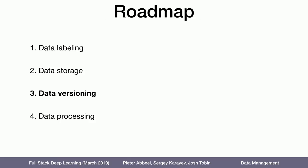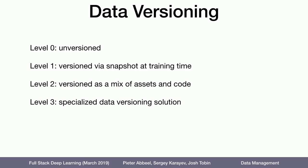The next thing I want to cover is how to version data. I think of data versioning as having multiple levels of complexity. Level zero is just there is no versioning — that's where everyone starts. Level one is you version it just by taking a snapshot. Level two is you version it in a better way that we'll talk about. Level three is you use some kind of specialized data versioning software.